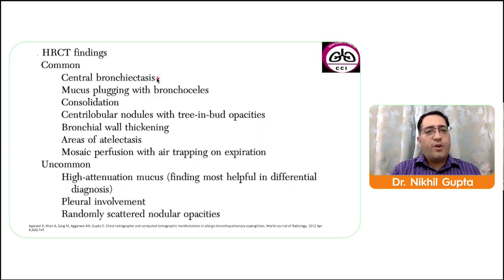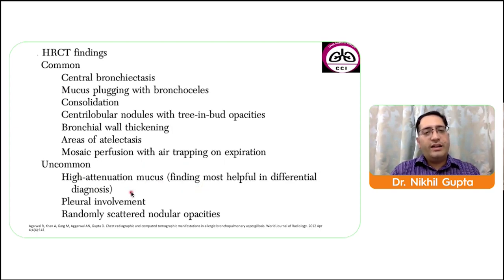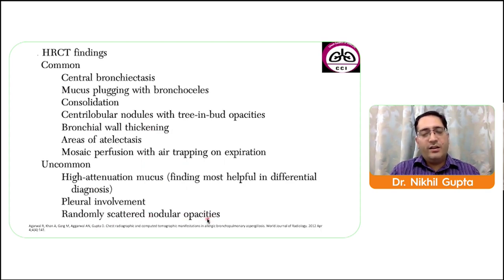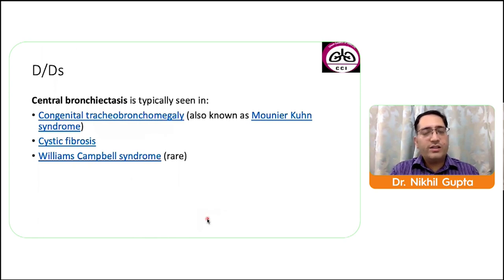Common HRCT findings include central bronchiectasis, mucus plugging with bronchoceles, consolidation, centrilobular nodules with tree-in-bud opacities, bronchial wall thickening, atelectasis, and mosaic perfusion with air trapping on expiration. Uncommon findings include high-attenuation mucus — the most helpful finding for differential diagnosis, seen in about 20 percent of cases — and pleural involvement, which is very rare and generally seen in later or complicated cases.